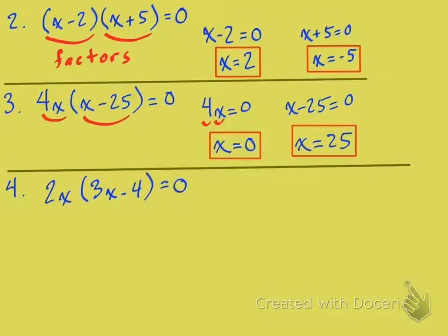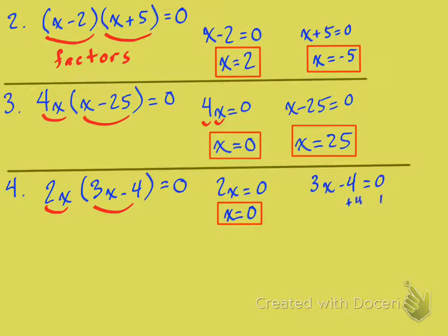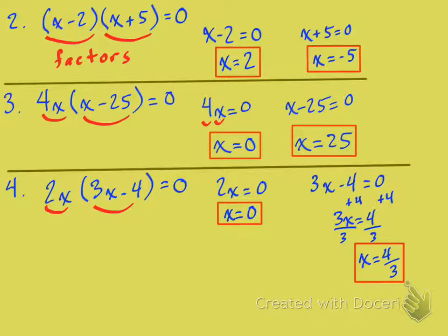Here's another one we saw before: 2x times (3x minus 4) equals zero. Set each factor equal to zero and solve. Notice that for the factor 3x minus 4, when you set it equal to zero and solve that little equation, you get four-thirds — not just four. It's four-thirds.